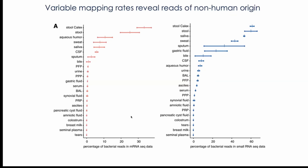We were observing very large percentages of reads mapping to bacterial genomes in saliva, sweat, and sputum - typical samples where you would expect bacterial RNA to be present. This is also reflected in the small RNA sequencing data, and to a lesser extent in mRNA capture sequencing, where some of the capture probes cross-hybridize with other RNAs. When digging into the bacterial species found in this analysis, it also made sense. Bacteria known to be present in the oral cavity were heavily enriched in saliva sequencing data, and bacteria present on skin were present in sweat samples.